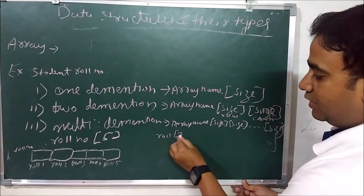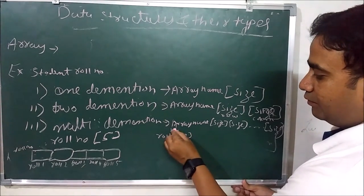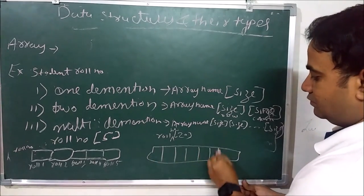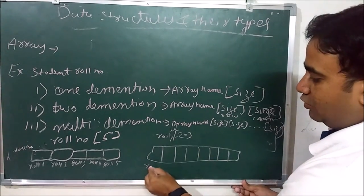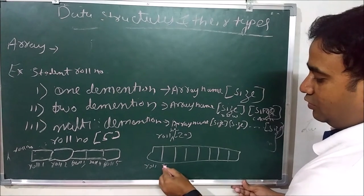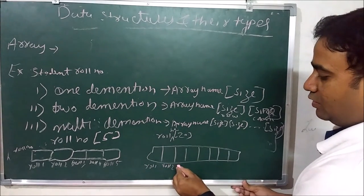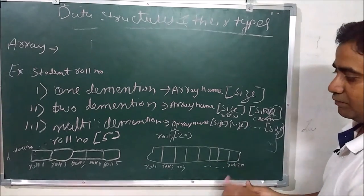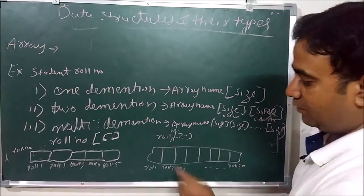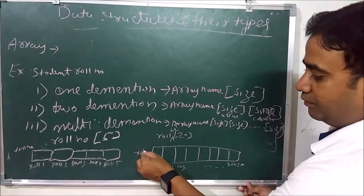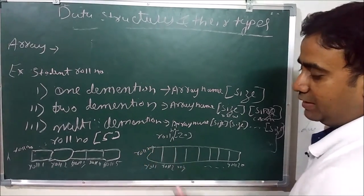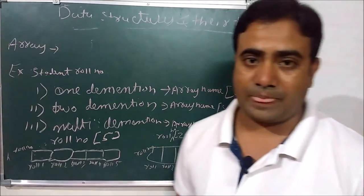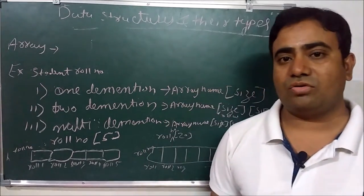Suppose roll number size is 20: we have roll number 1, roll number 2, roll number 3, up to roll number 20. For example, roll number 5 and roll number 3 — this is an example of an array. Now we are talking about linked list.